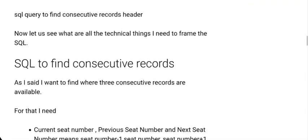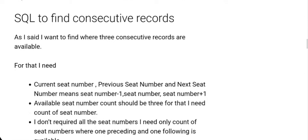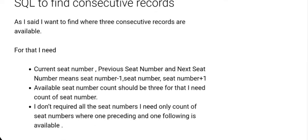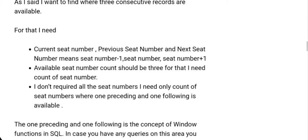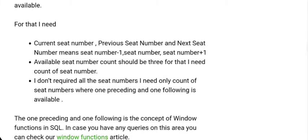Technically speaking, what I need from this table is the current seat number, the previous seat number, and the next seat number. I want to capture that count — not all rows, just the preceding one and the following one.